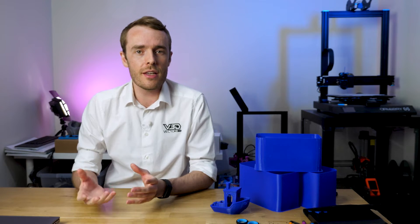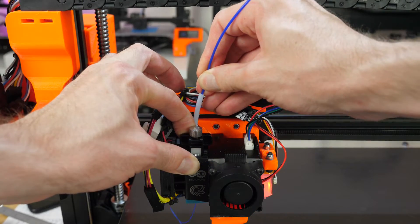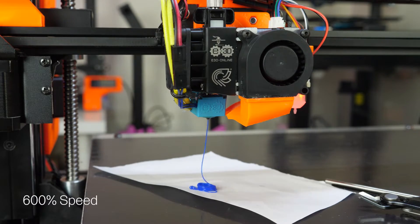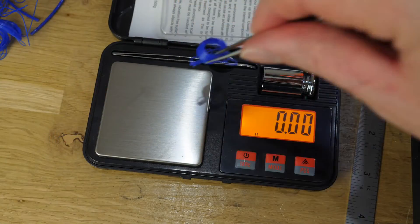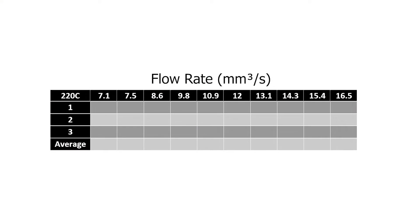The method that we're going to be using today is basically the weight method that we used in the last video. I'll be preheating the nozzle and loading the filament before the test starts. The test gcode runs 10 different flow rates while keeping the nozzle at the target temperature using standard PID control. The test sample then gets weighed and that weight is recorded. I repeated each temperature three times and took an average.